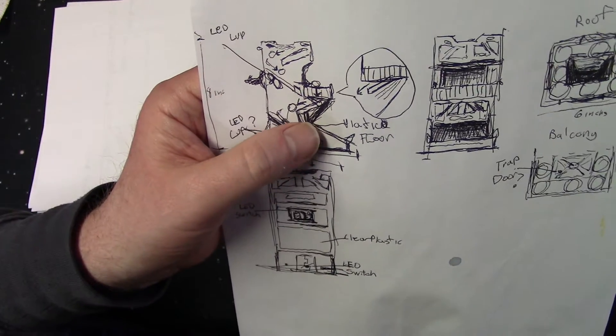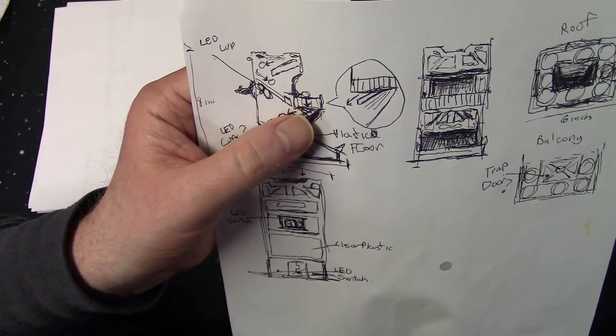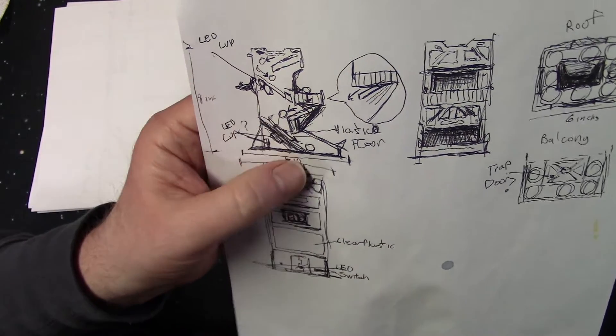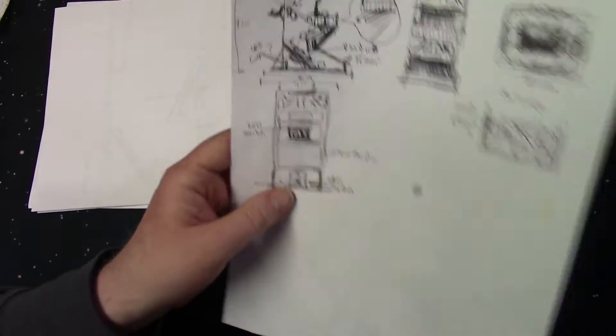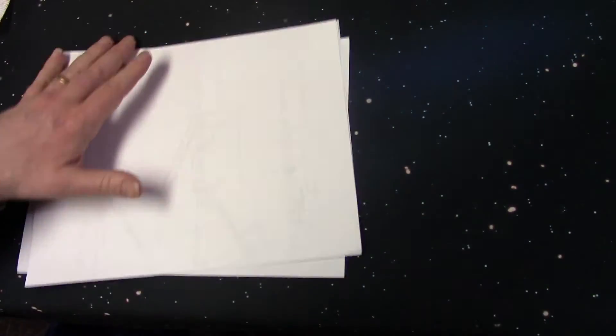And the trap door will drop down once the dice land. Once enough dice land on there, the trap door will drop down and it'll go down to the bottom tier. Each tier has space for miniatures.